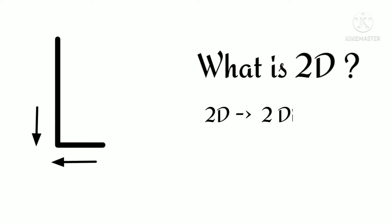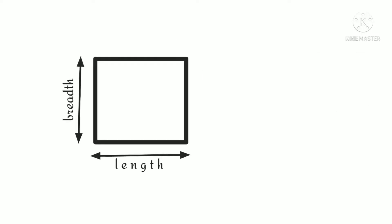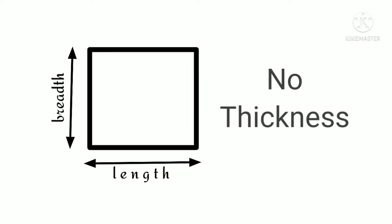Today, we will learn about 2D shapes. First, let us understand what is 2D. 2D is two dimensions, that is length and breadth. They do not have any thickness and can be measured only by the two dimensions.